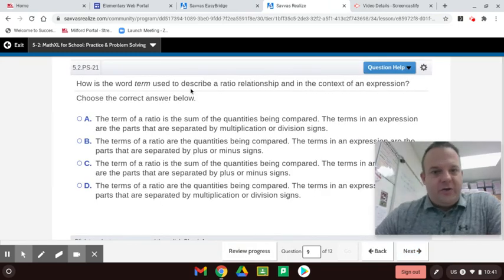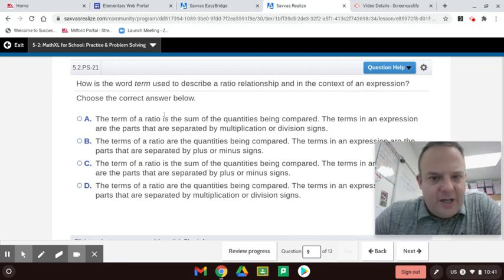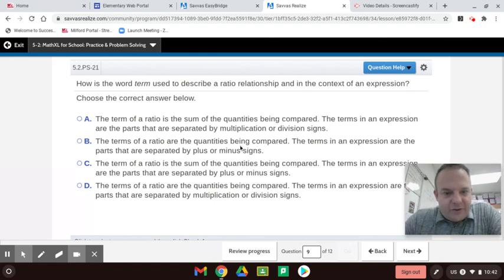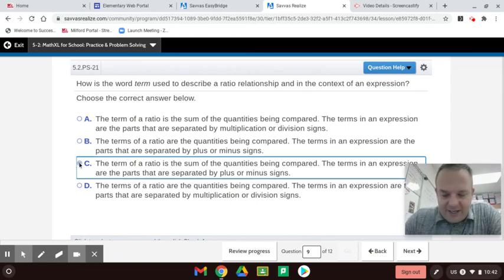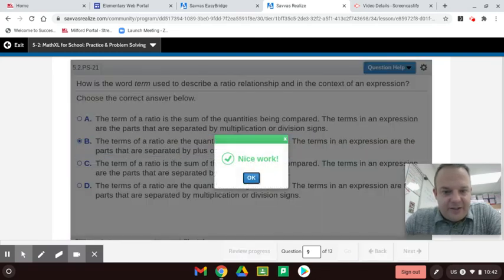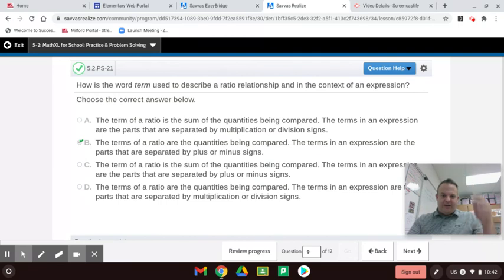How is the term used to describe a ratio relationship in context of an expression? The term of a ratio is the sum of the quantities being compared. The terms in an expression are the parts that are separated by multiplication. No, a term and an expression are separated by addition or subtraction. So that's an important distinction. The terms of the ratio of the quantities being compared. The terms in expression are - yep. So that part is right, but I think this is the sum of the quantities being compared. Well, that was not correct. I guess this is this one. The terms of the ratio are the quantities being compared. Yeah. Sometimes you have to add up the quantities being compared, and I guess this was mentioning a whole. So anyway, just misunderstood there.